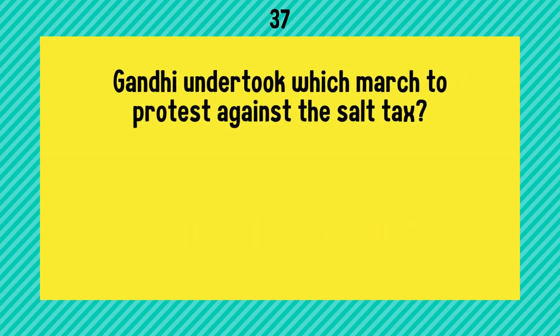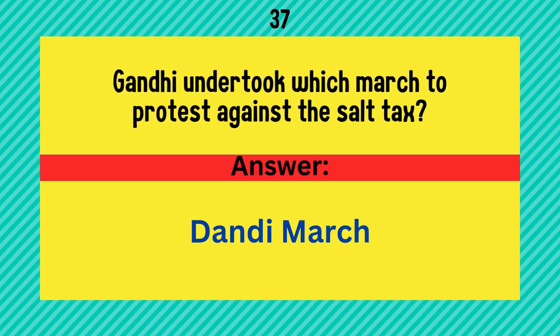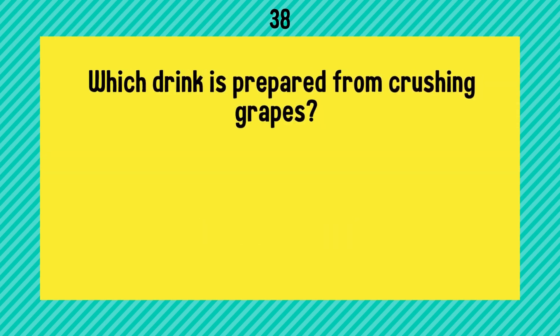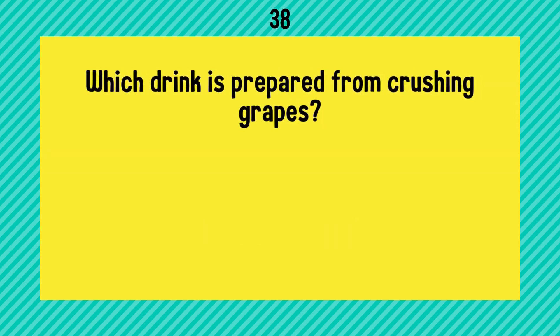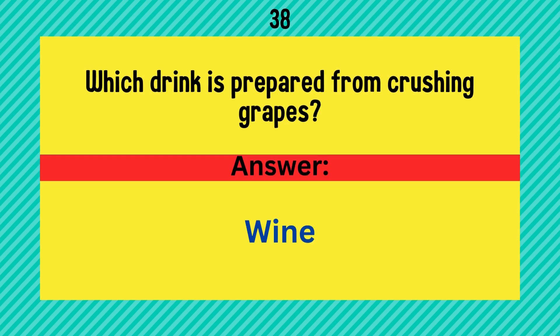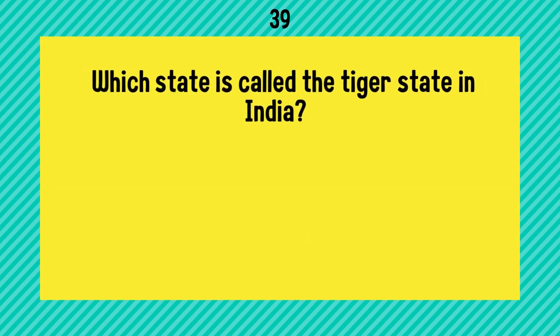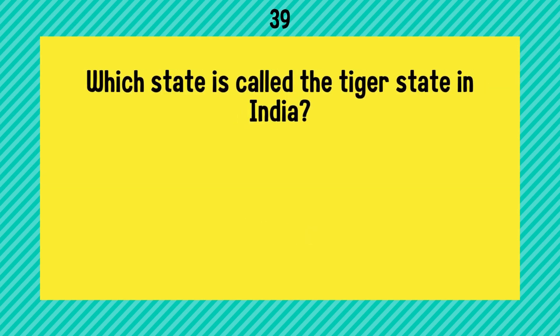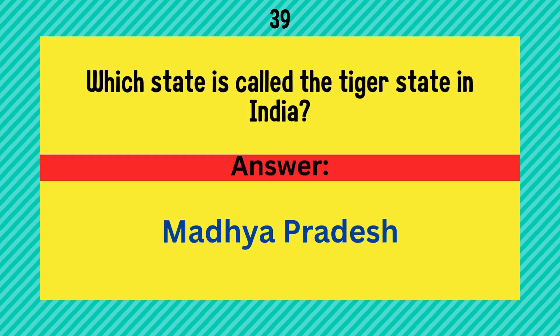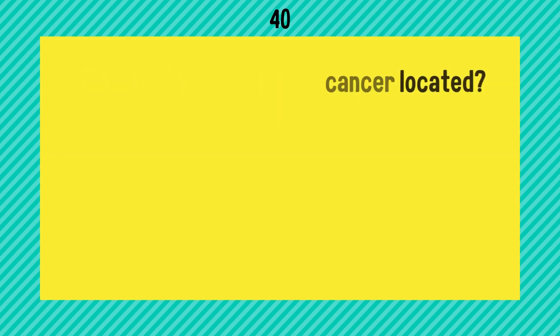Gandhi undertook which march to protest against the salt tax? It is the Dandi March. Which drink is prepared from crushing grapes? Answer is wine. Which state is called the tiger state in India? Answer is Madhya Pradesh.